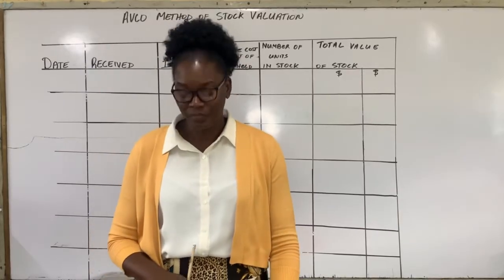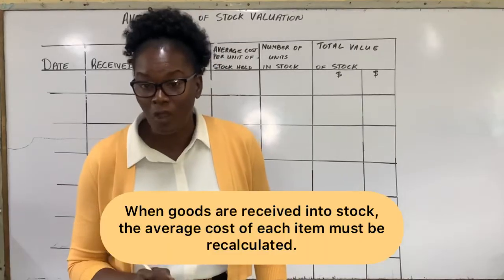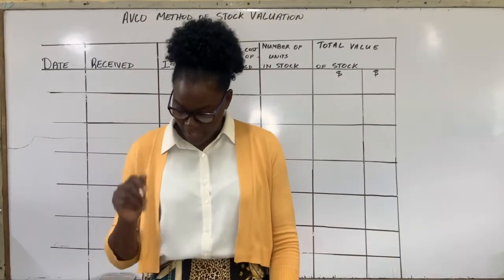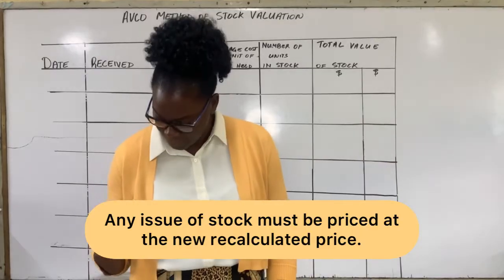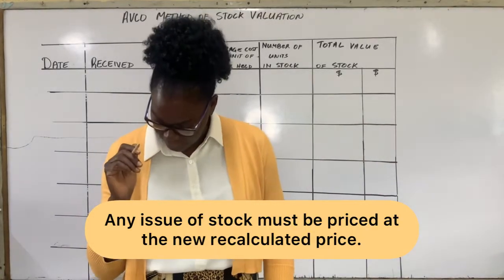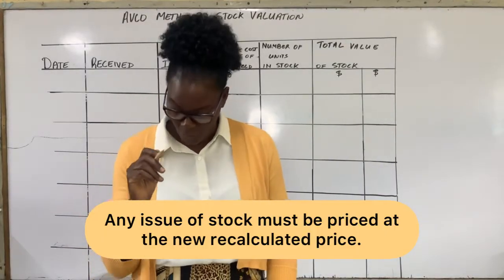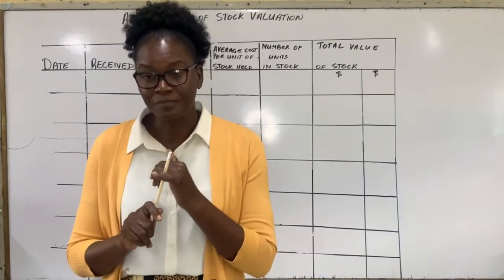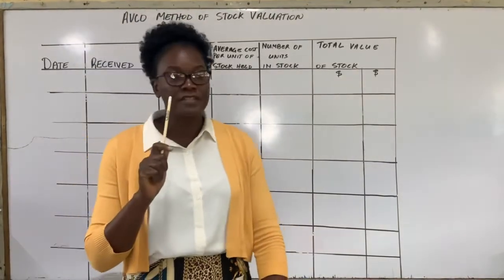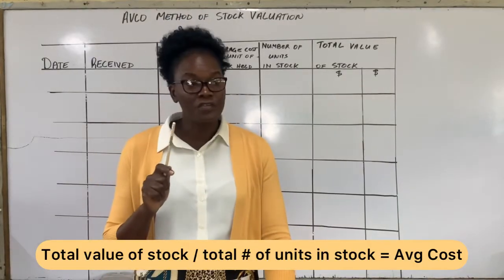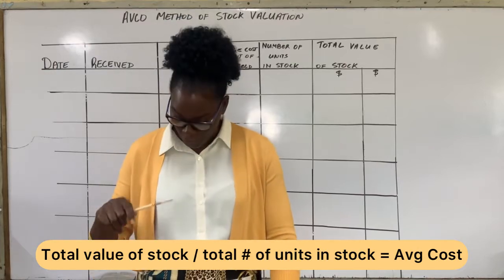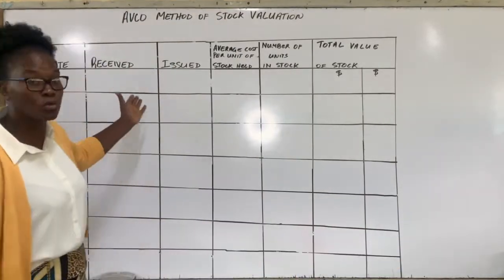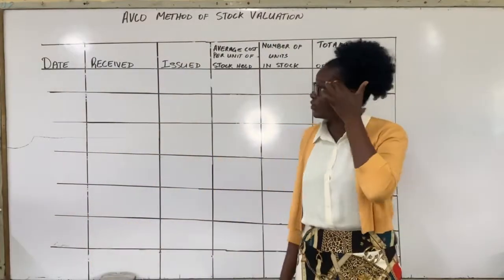When goods are received into stock, the average cost of each item must be recalculated, and any further issue of stock must be priced at that recalculated figure. If you bear the principles in mind you shouldn't have a problem. Follow this simple formula: total value of stock divided by the total number of units in stock will give you the average cost.